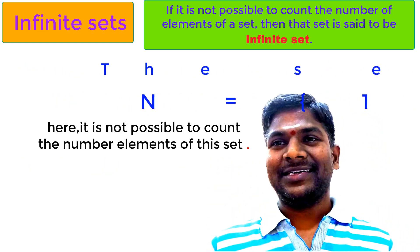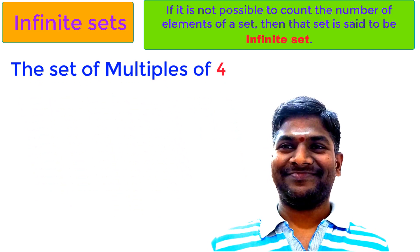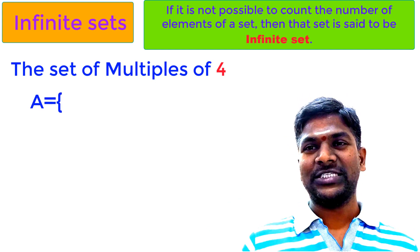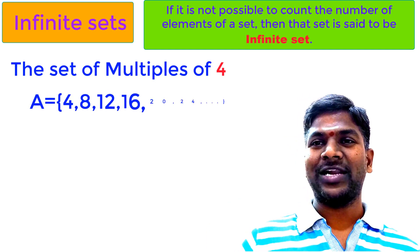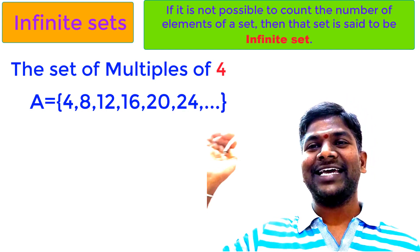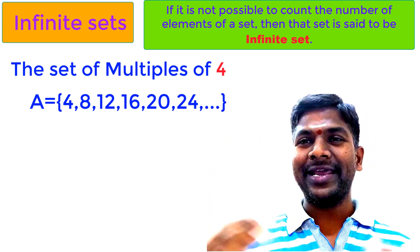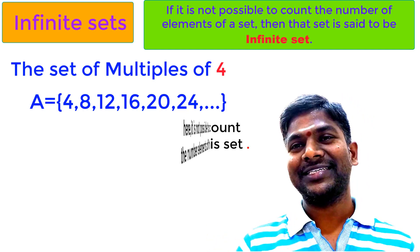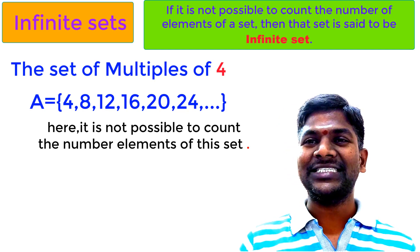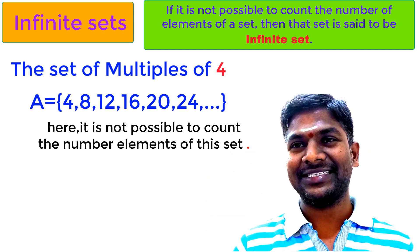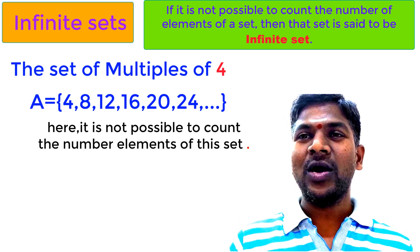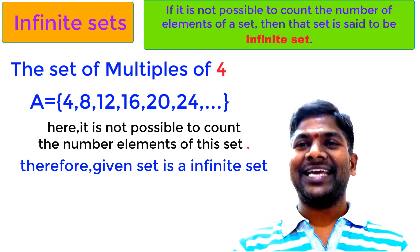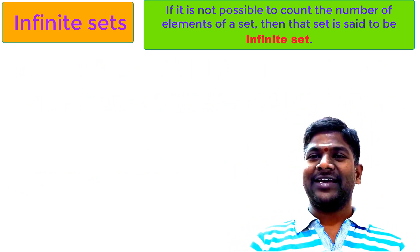Another example: the set of multiples of 4. The multiples of 4 are 4, 8, 12, 16, 20, and so on. How many elements are in this set? We cannot count — it has an infinite number of elements. It is not possible to count the number of elements in this set exactly, so it is an infinite set.